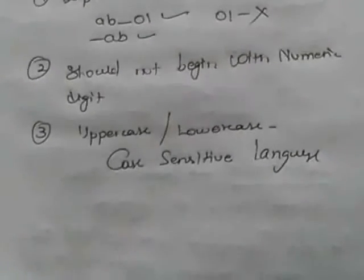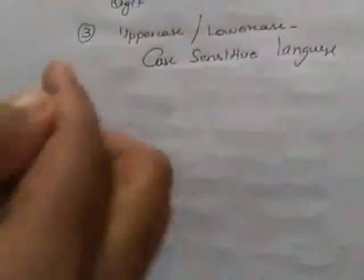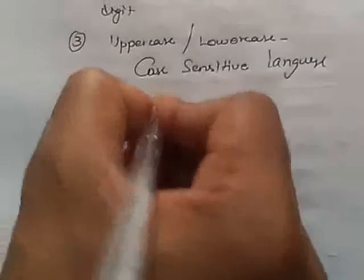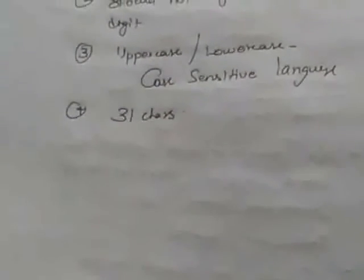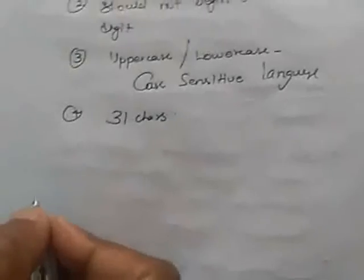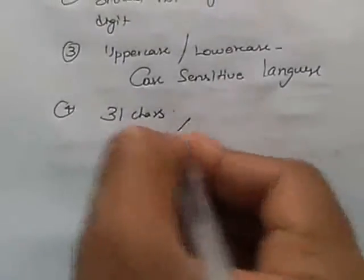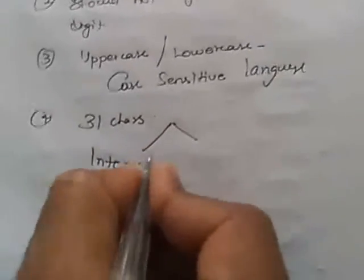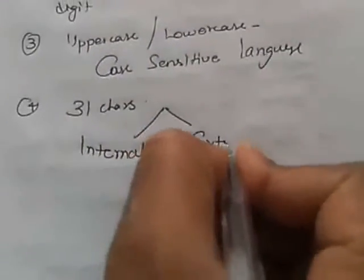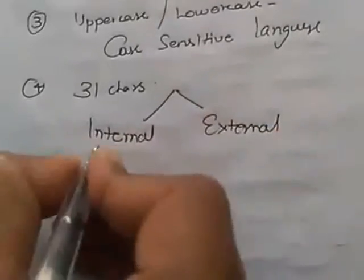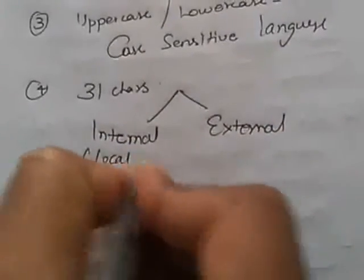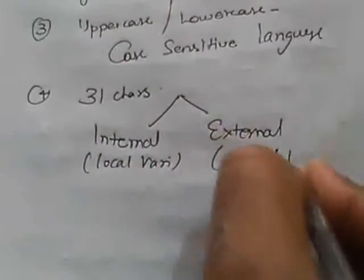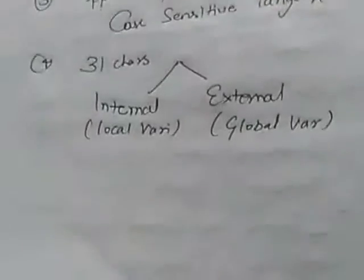Keywords cannot be represented in an identifier. The length of the identifier should not be more than 31 characters. Now, we have two types of identifiers. One is internal identifiers and another one is external identifiers. Internal identifiers can be treated as local variables. External identifiers can be treated as global variables.